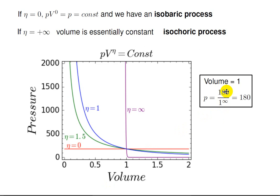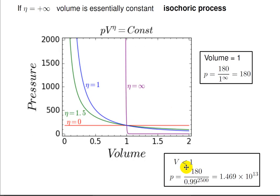If we let the constant equal 180, and units don't really matter here, then when the volume is equal to 1, the pressure will be 180 over 1 to the power of infinity, which is just 180. And when we calculate pressure with the volume less than 1, say 0.99, I can no longer let eta equal infinity and use a calculator. So I will approximate infinity with the value 2,500, not so very close to infinity. And the pressure, 180 over 0.99 to the power of 2,500, shoots up into the heavens at 1.47 times 10 to the 13th.